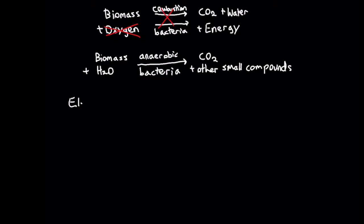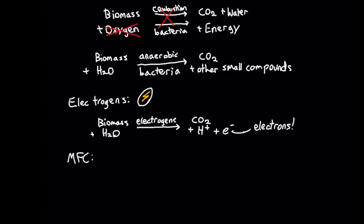Some anaerobic bacteria, called electrogens, can break down biomass and produce carbon dioxide, hydrogen ions, and electrons. In a microbial fuel cell, these electrons can be harnessed to make electricity.